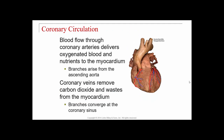Coronary circulation: blood flows through coronary arteries delivering oxygenated blood and nutrients to the myocardium. The branches arise from the ascending aorta. Coronary veins remove carbon dioxide and waste from the myocardium and empty into the coronary sinus. The right coronary artery and left coronary artery are the first branches off the aorta — the heart is doing all the work, so it gets first dibs on fresh oxygenated blood.